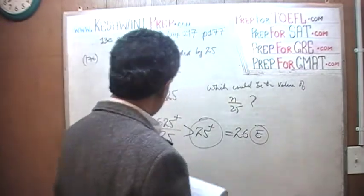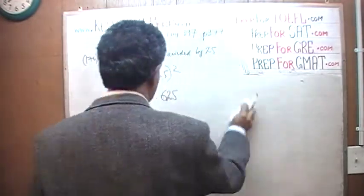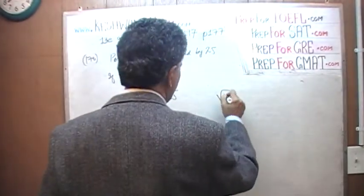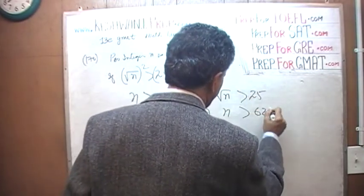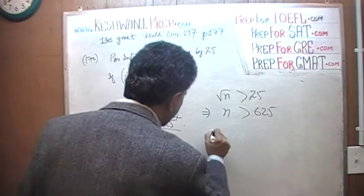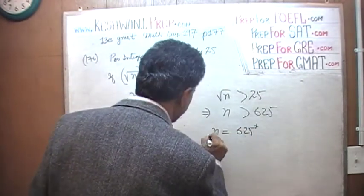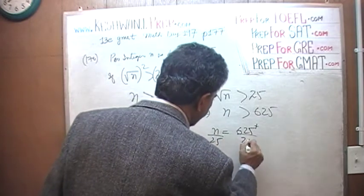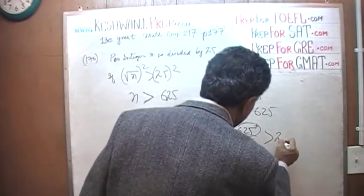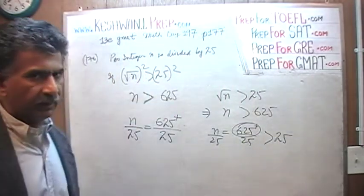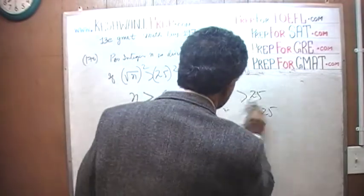One more time here. We are told that the square root of N is more than 25. That implies that N must be more than 625. So if you take 625, something more than 625, and divide it by 25, obviously whatever the 625 happens to be, if you divide it by 25, it has to be more than 25. And there is only one answer choice that is more than 25, and that's answer choice E.